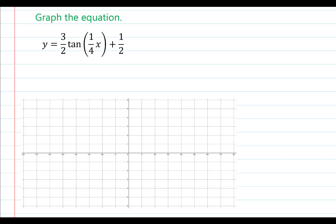Let's use this information to graph the equation y equals three halves times the tangent of one fourth x plus one half. So first, what we notice is that the absolute value of a is equal to three halves. So this represents a vertical stretch by a factor of three halves because three halves is larger than one. Next, we notice that we have a b value of one half, which represents a shift up one half.